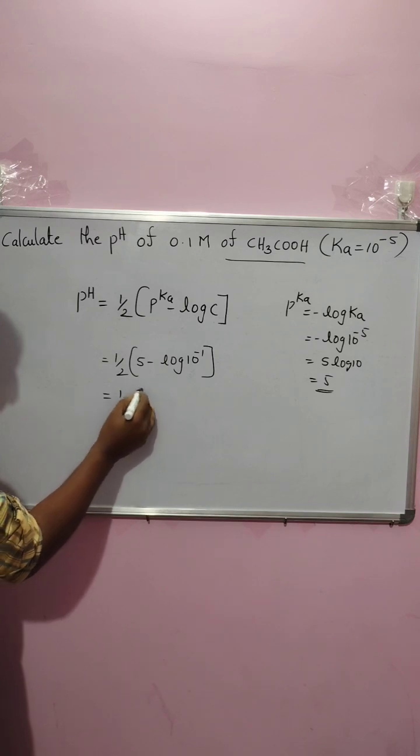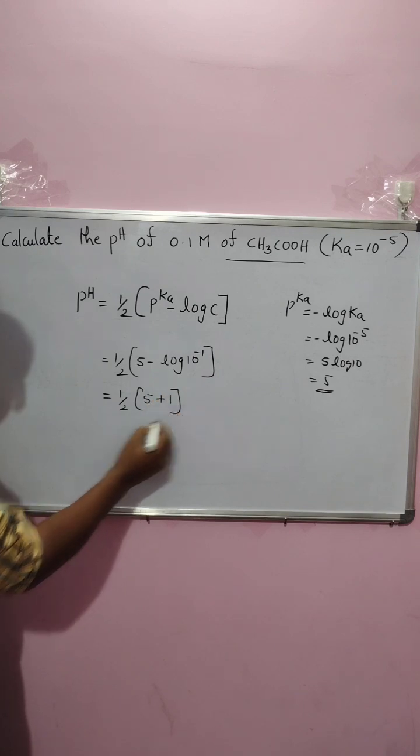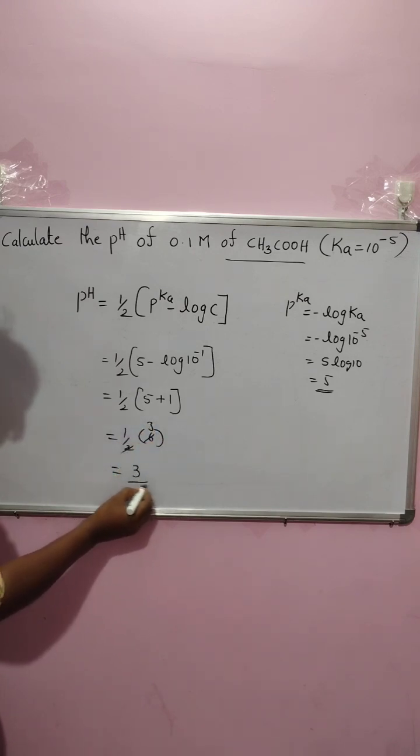Then 1 by 2 into 5, minus into minus is plus 1. Then 1 by 2 into 6. That is 3. So the pH value you can get is 3.